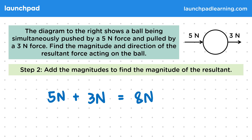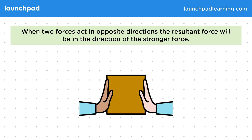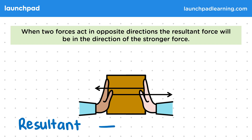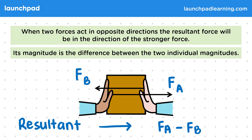But what would happen if the forces were in opposite directions? When two forces act in opposite directions, the resultant force will be in the direction of the stronger force. So if there are two people pushing the same box in opposite directions, the resultant force is to the right, which is the same direction as the larger force, shown here by the longer arrow. Its magnitude is the difference between the two individual magnitudes, so that is FA minus FB.